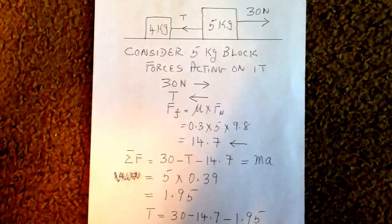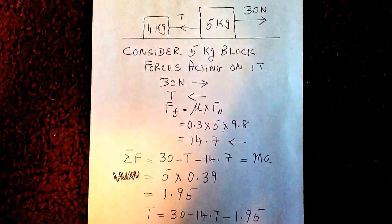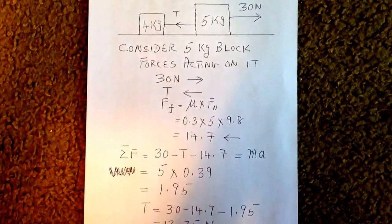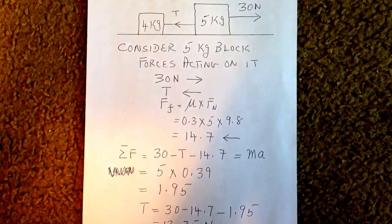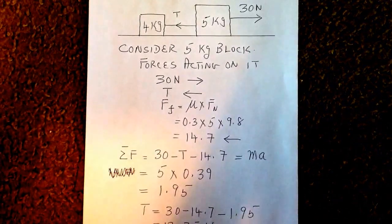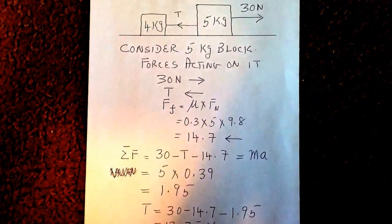Now to calculate the tension in the rope. Let's consider the 5-kilogram block. The forces acting on it are 30 newtons in the right direction, tension in the left direction, and the friction force in the left direction.